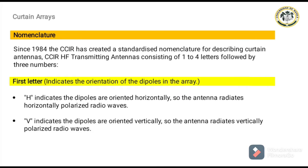Since 1984, the CCIR has established a standard nomenclature for curtain antennas called CCIR HF transmitting antennas, which consists of one to four letters followed by three numbers. The first letter indicates the orientation of the dipole in the array. The letter H denotes that the dipoles are oriented horizontally, resulting in horizontally polarized radio waves being transmitted by the antenna. The letter V denotes that the dipoles are oriented vertically, resulting in vertically polarized radio waves.